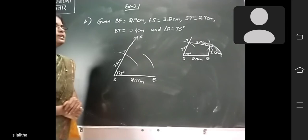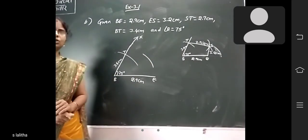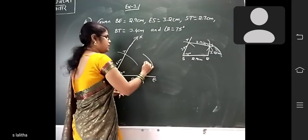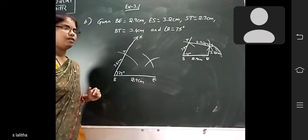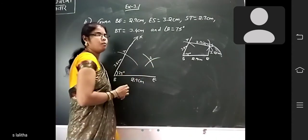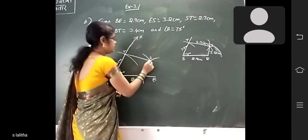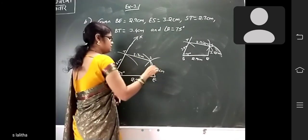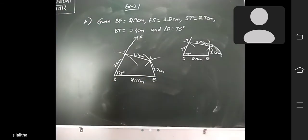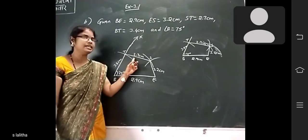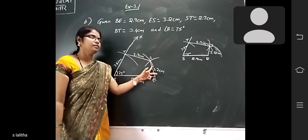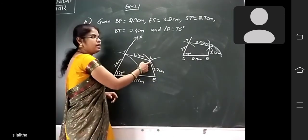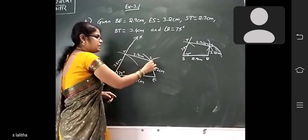Measure 3.2 cm on the scale. From E onwards, draw an arc of 3.2 cm. Now these two arcs will be intersecting — that point is S. Join T to S and E to S. This is 2.7 cm, this is 3.2 cm. So the required quadrilateral DEST is formed.